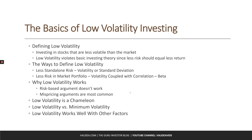Now that we have defined the measures of low volatility, let's go back to why it works. Investing factors that work over time typically do so for one of two reasons: either they are riskier than the market and investors get paid for taking on that risk, or they capitalize on some sort of systematic mispricing due to investor behavior. Low volatility is impossible to explain using the first framework, because by definition it involves investing in stocks that are less risky than the market.